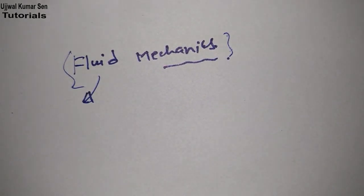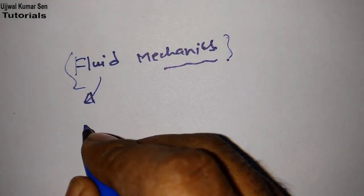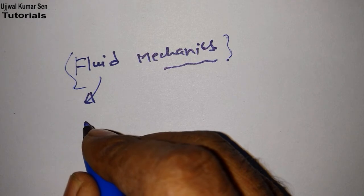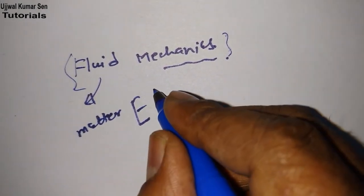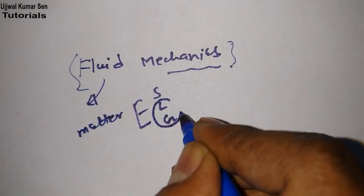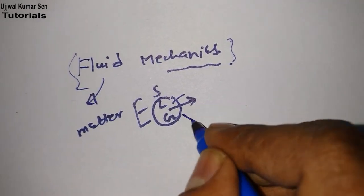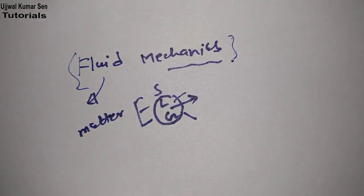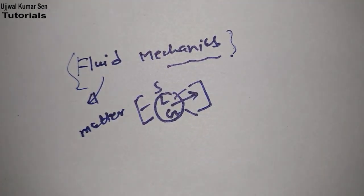So basically, what is fluid? Fluid is a part of matter. If you divide matter, there are three types: solid, liquid, and gas. Fluid is a combination of liquid as well as gas — that means it can be liquid or it can be gas. Both liquid and gas are fluid.